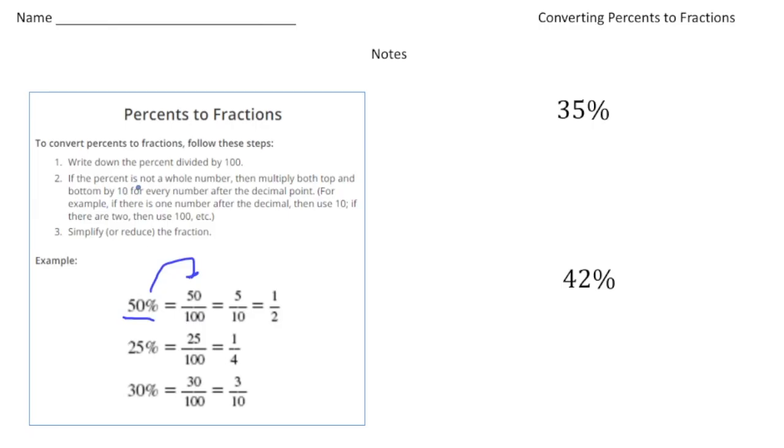Step two says if percent is not a whole number, then multiply both the top and bottom by 10 for every number after the decimal point. Now, this right here is not a decimal, right? So we're all set. So 50 over 100 can reduce down to 5 over 10, which equals one half.